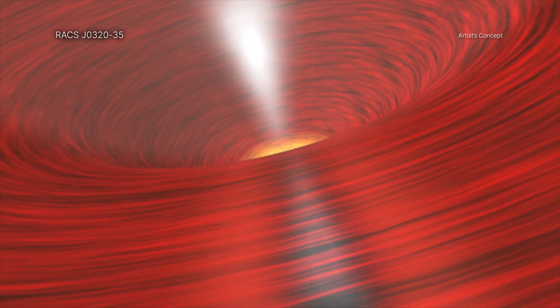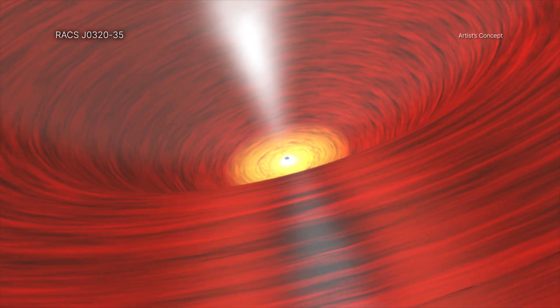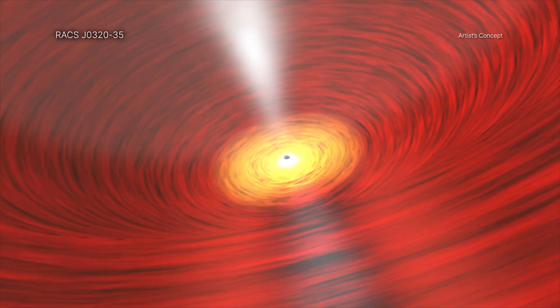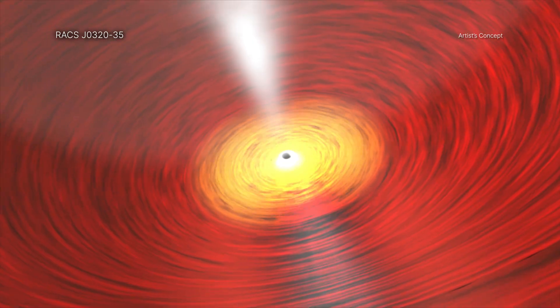Scientists think that black holes growing more slowly than the Eddington rate need to be born with masses of about 10,000 suns or more, so they can reach a billion solar masses within a billion years after the Big Bang, like they have observed in RACS J0320-35.